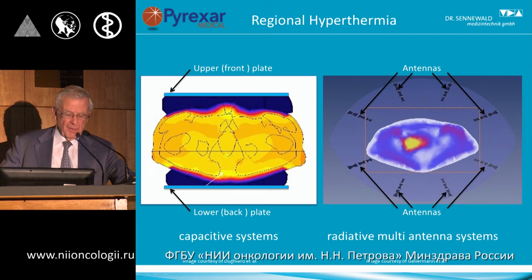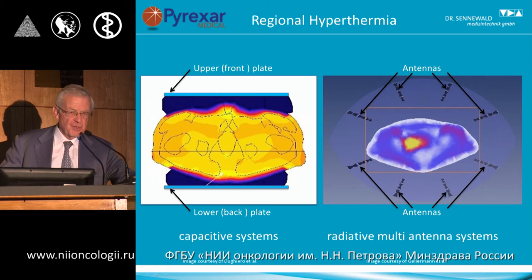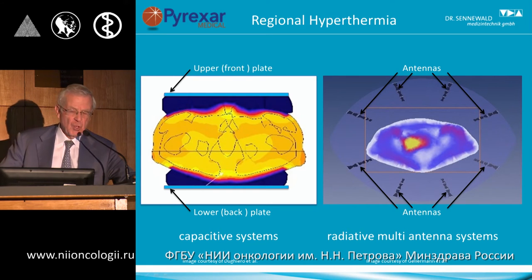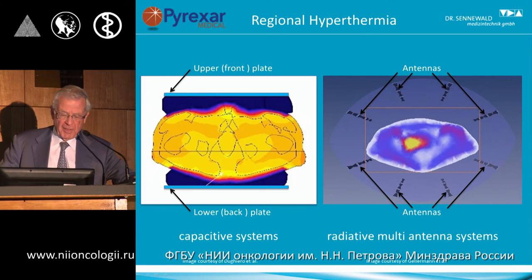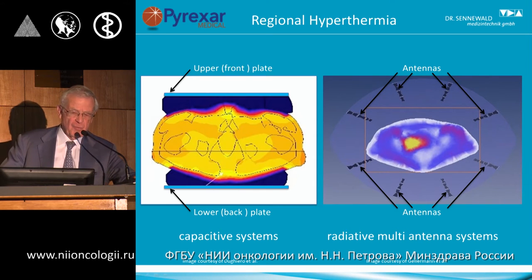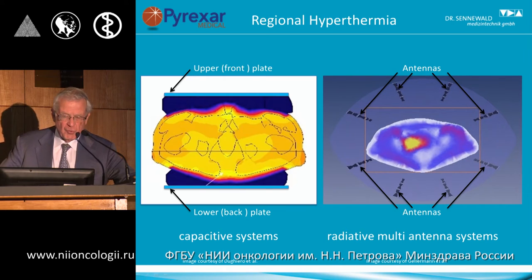Regional hyperthermia — capacitive systems and radiative systems: how do they distinguish themselves? Capacitive systems use a frequency range around 13 megahertz, versus radiative systems which use the entire range from 70 to 1000 megahertz.